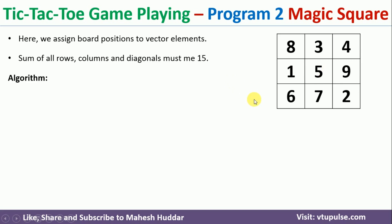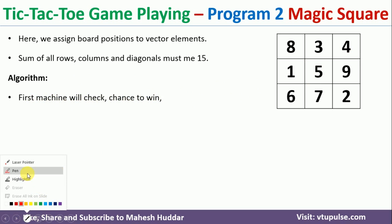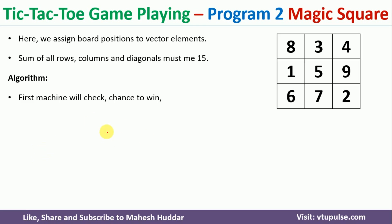Now, the algorithm for program 2 works as follows. First, the computer will check its own chance of winning. If the computer is winning, that is final. If it is not winning, it will check whether the human player is winning. If the player is winning, the computer will block that particular move.